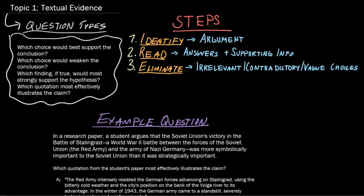We are getting started with our first topic here: textual evidence, likely the biggest one you'll see on your SAT. Almost all four of these example question types you will see on test day. They're going to ask you some variation of which choice is going to best or worst support the conclusion — which choice is better, which choice might weaken that conclusion, which finding might support a conclusion, which quotation might support a conclusion.